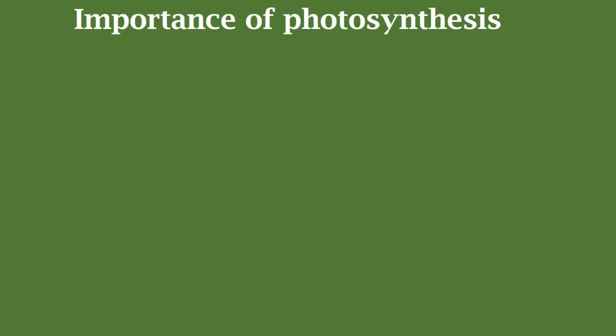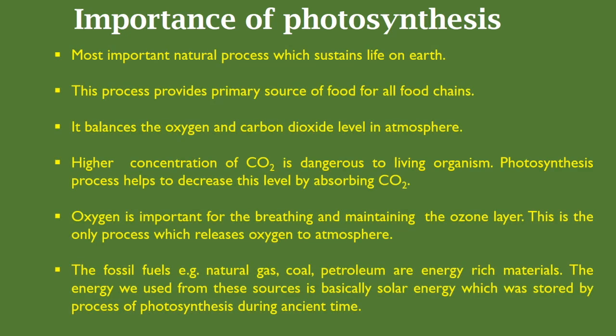Photosynthesis is the most important natural process that sustains life on earth. This process provides the primary source of food for all food chains. It balances the oxygen and carbon dioxide levels in the atmosphere. Higher concentrations of carbon dioxide are dangerous to living organisms, and photosynthesis helps decrease this level by absorbing carbon dioxide.